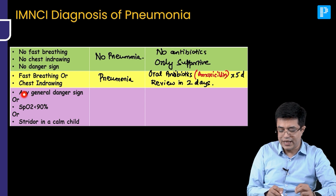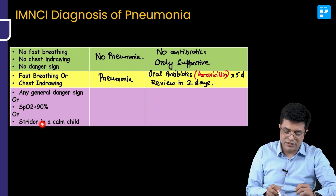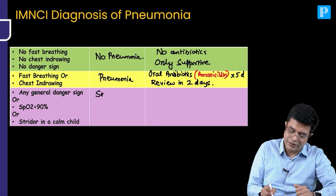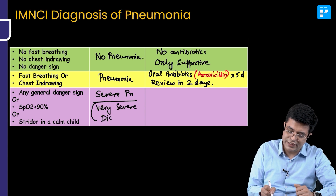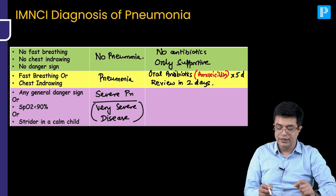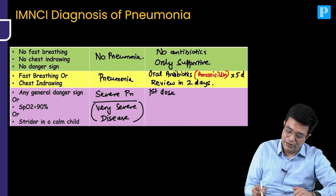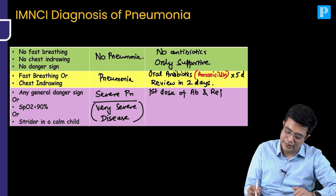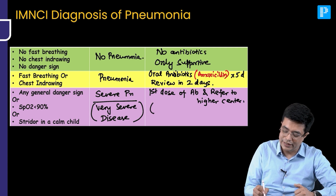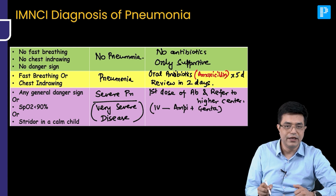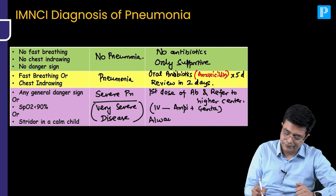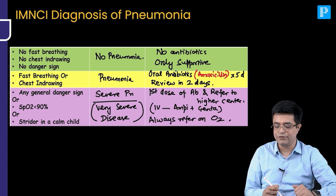If the patient has any general danger sign, SpO2 less than 90%, or stridor in a calm child, the diagnosis is severe pneumonia — also known as very severe disease, coded pink. There is no category called 'very severe pneumonia'; severe pneumonia is called very severe disease. In these patients, give the first dose of antibiotic and refer to a higher center, or admit if already at a higher center. The preferred antibiotic is IV ampicillin combined with gentamicin. Always refer these patients on oxygen.